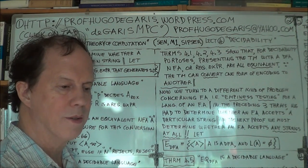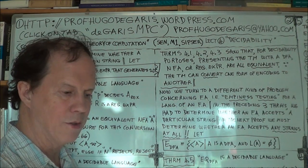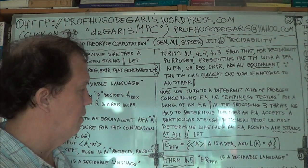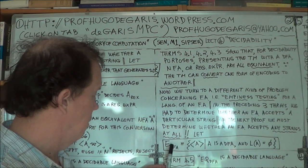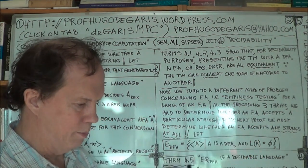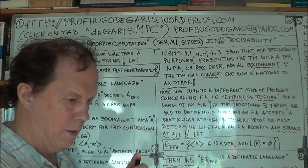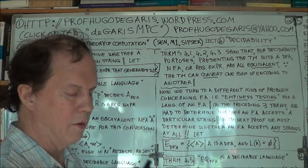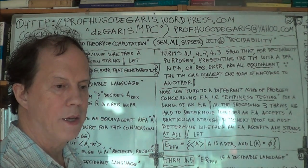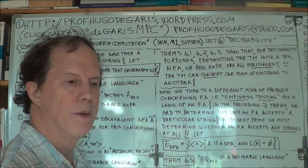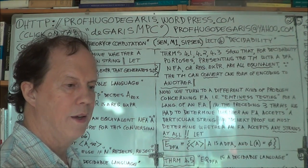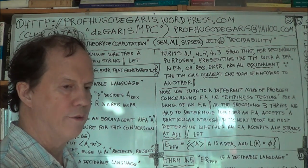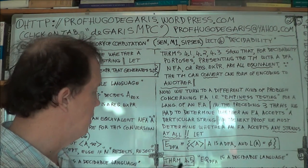So if it accepts one or more strings, the answer to the question 'does it accept zero strings' would be no, obviously, because it accepts some. So that's the computational problem — find an algorithm, a Turing machine, that answers the question yes or no whether a particular, random finite automaton accepts no strings. If it accepts no strings, the answer's yes. And if the finite automaton accepts one or more strings, then the answer's no. Find that algorithm — find the Turing machine that decides this language.